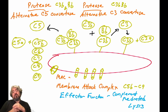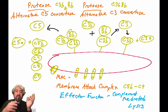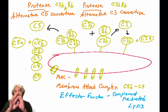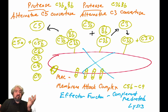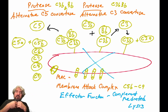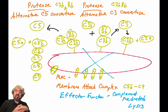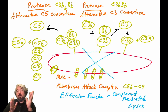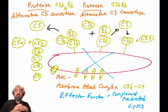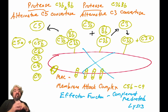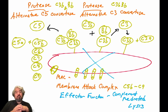When the alternative C5 convertase forms, it cleaves C5s producing C5b, which binds with C6, C7, and C8 into the membrane, recruiting C9s, forming a pore. The pathogen will essentially deflate — its inner contents drain out and the pathogen dies. This is another effector function of complement: no matter which pathway of complement is activated, we'll see the formation of membrane attack complexes, which help eliminate pathogens.